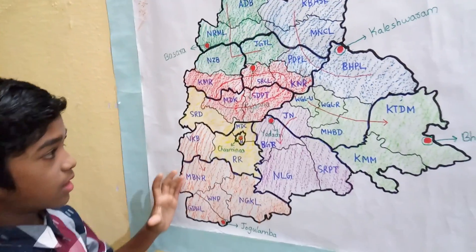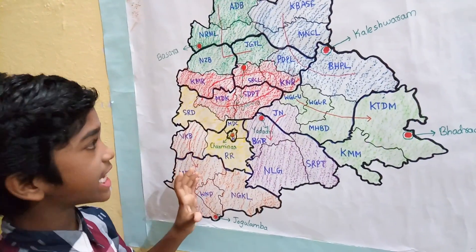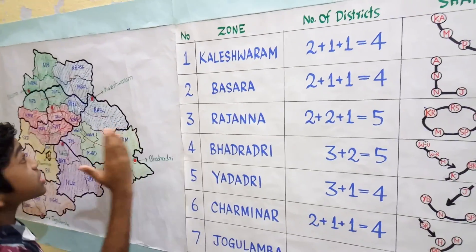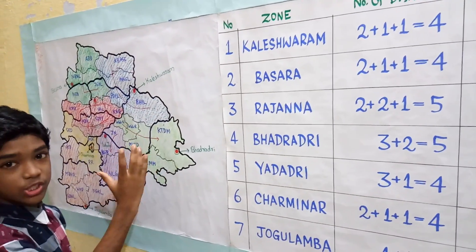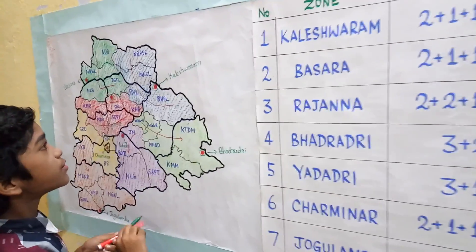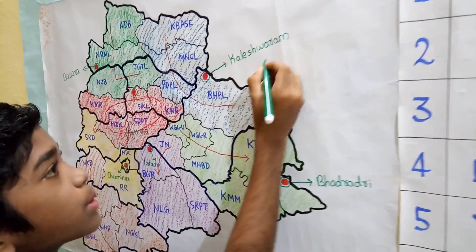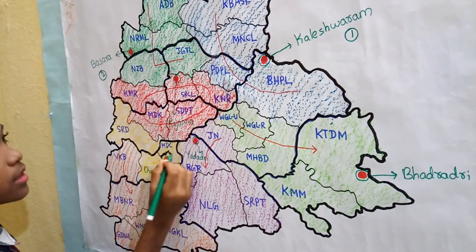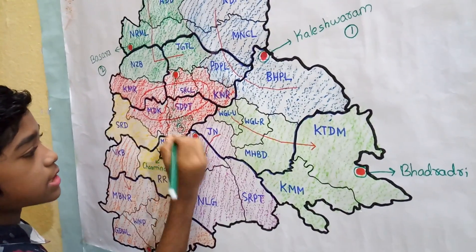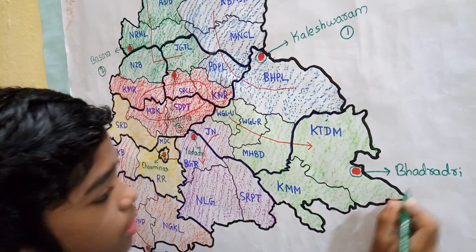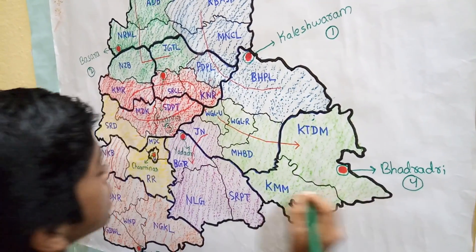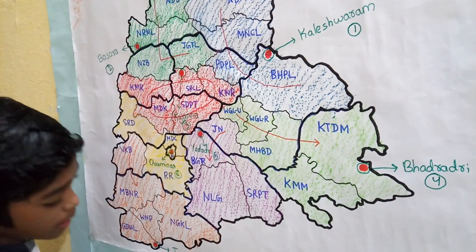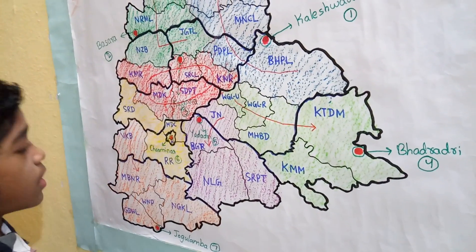Now let us see the consolidation of all zones. We give numbers to these zones: number 1 is Kaleshwaram, number 2 is Basara, number 3 is Rajana, number 4 is Bhadradri, number 5 is Yadadri, number 6 is Charminar, and number 7 is Jogulamba.